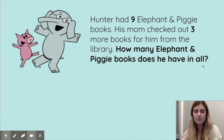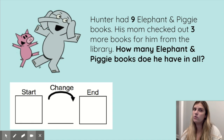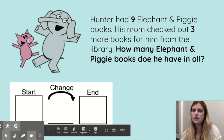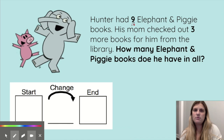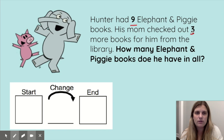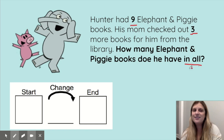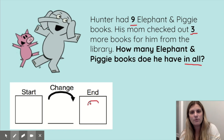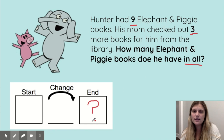Now we know it's asking how many he has in all. We can use that change diagram. This time I'm going to underline the numbers and really think about their relationship — how they're relating to one another. He starts with nine, his mom goes and gets three from the library. How many does he have in all? I need to solve for how many he has in the end, just like that last problem with the mini pumpkins.